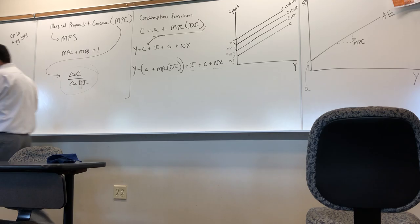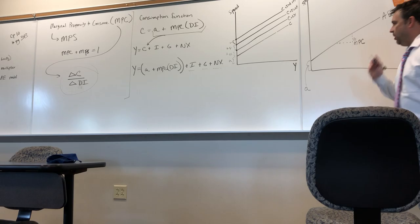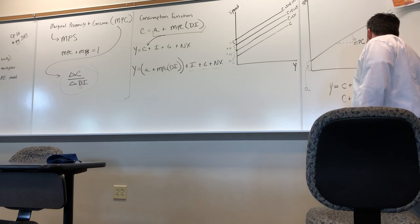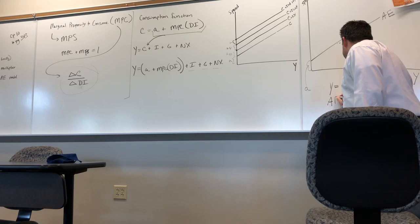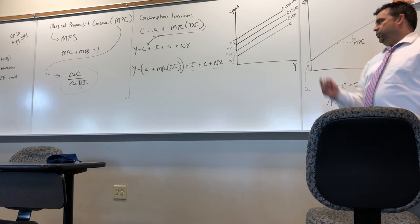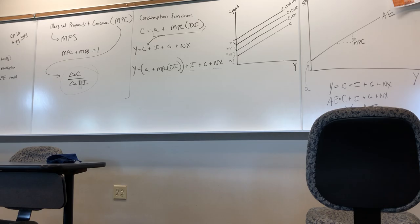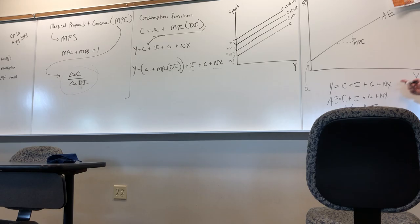We'll leave it here as a lead-in for the next class. We said Y equals C plus I plus G plus NX, and C plus I plus G plus NX equals our aggregate expenditure. Using the transitive property, at equilibrium in the aggregate expenditure model, Y will equal AE. I've got a function for AE — so what do I do with this Y term? How do I capture it? That's where we'll pick up next time. We've actually done the hard part of this model; next we'll do equilibrium, model changes, and the math.